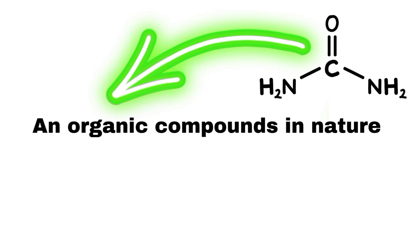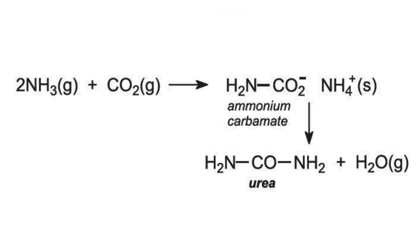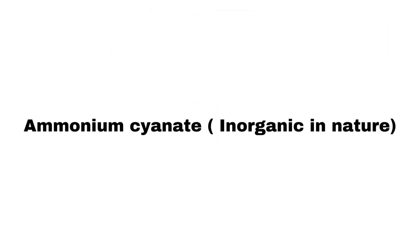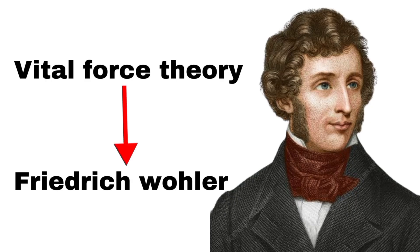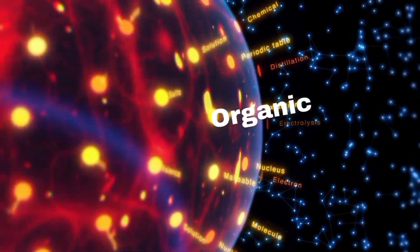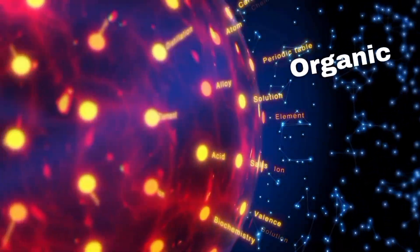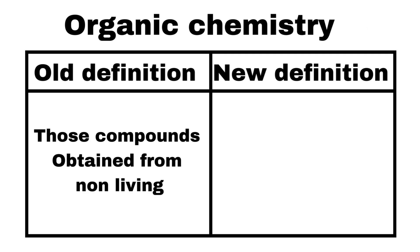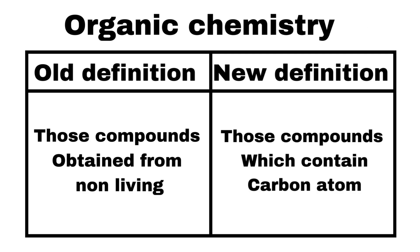Urea is an organic compound prepared from ammonium cyanate, which is inorganic in nature. After the rejection of vitalism, the modern definition of organic chemistry was put forward, and now we say those compounds that contain carbon are organic in nature.